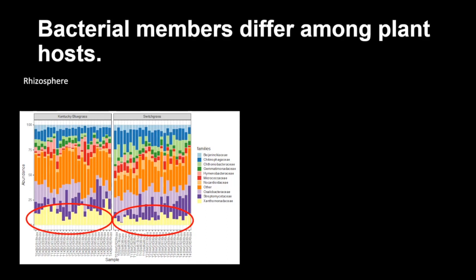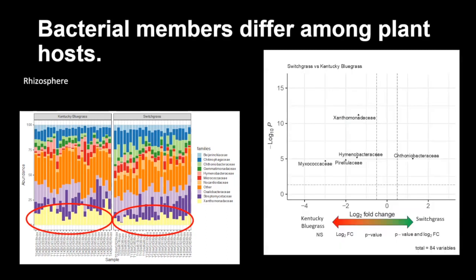We saw this and wanted to find another way to test these differences, so we did a differential abundance analysis — another statistical test to examine the differences. The y-axis is the log two-fold change, showing how different they are, and the x-axis is the p-value showing significance. Anything in the positive values of the log two-fold change is favored towards switchgrass, and everything in the negative values is favored towards Kentucky bluegrass. We can see Xanthomonadaceae is favored by Kentucky bluegrass, consistent with the higher composition we observed.